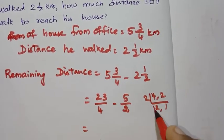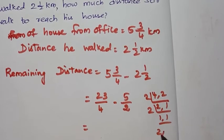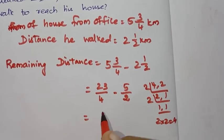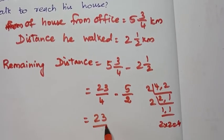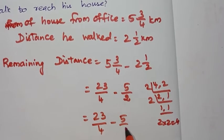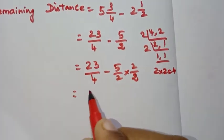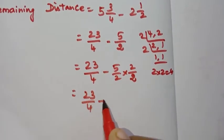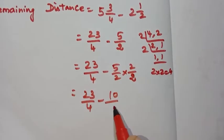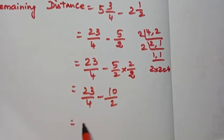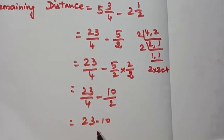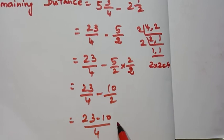The LCM of 2 and 4 is 4. So we have 23/4 minus 5/2. Multiply 5/2 by 2/2 to get the common denominator. The LCM is 4, so it becomes 23/4 minus 10/4.